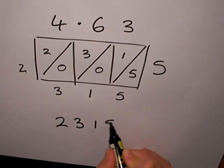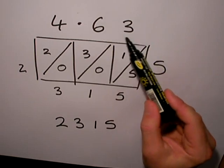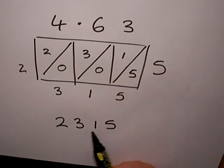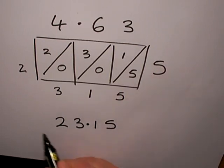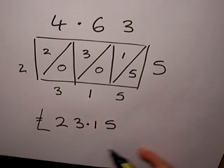But I need to put the decimal point in. I'm looking for how many digits are behind the decimal point. Here I've got two digits after the decimal point, so I need two digits after the decimal point in my answer. 4 pounds 63 multiplied by 5 is 23 pounds and 15 pence.